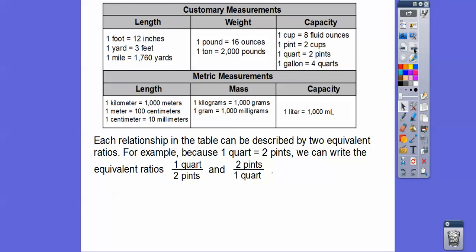Each relationship in the table can be described by two equivalent ratios. For example, one quart equals two pints. We can represent it as one quart to two pints, or as two pints to one quart. It depends on whether we want to convert to pints or to quarts — we use whichever ratio fits our direction.